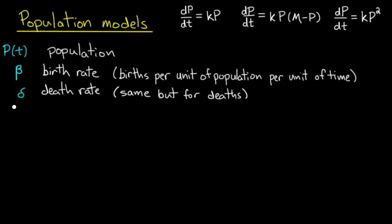And similarly we have a death rate, we call it delta. And in the same fashion it is the number of deaths per unit of population per unit of time.